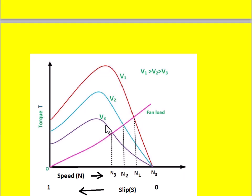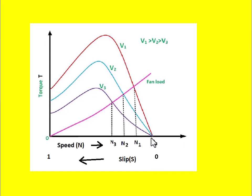When V1 is applied to the stator winding, the torque-speed curve is at its highest. At zero speed this is the starting torque, and at synchronous speed the torque is zero — meaning slip is zero and rotor speed equals Ns. When voltage is reduced to V2, the curve shifts down, and when further reduced to V3, the characteristic reduces further. The load curve drawn represents the connected load.